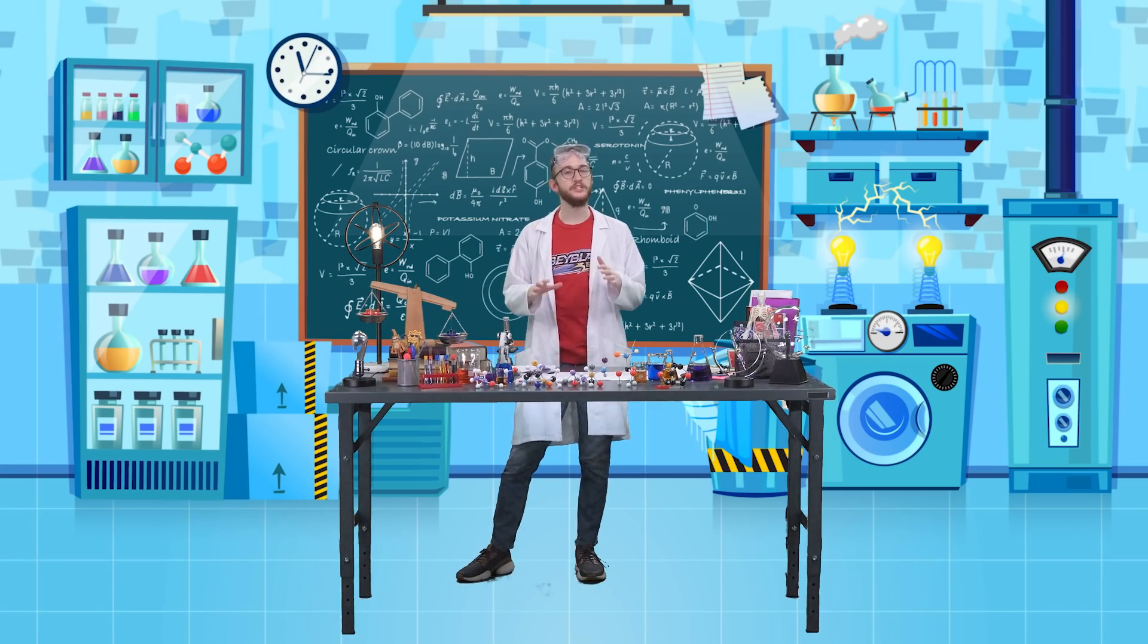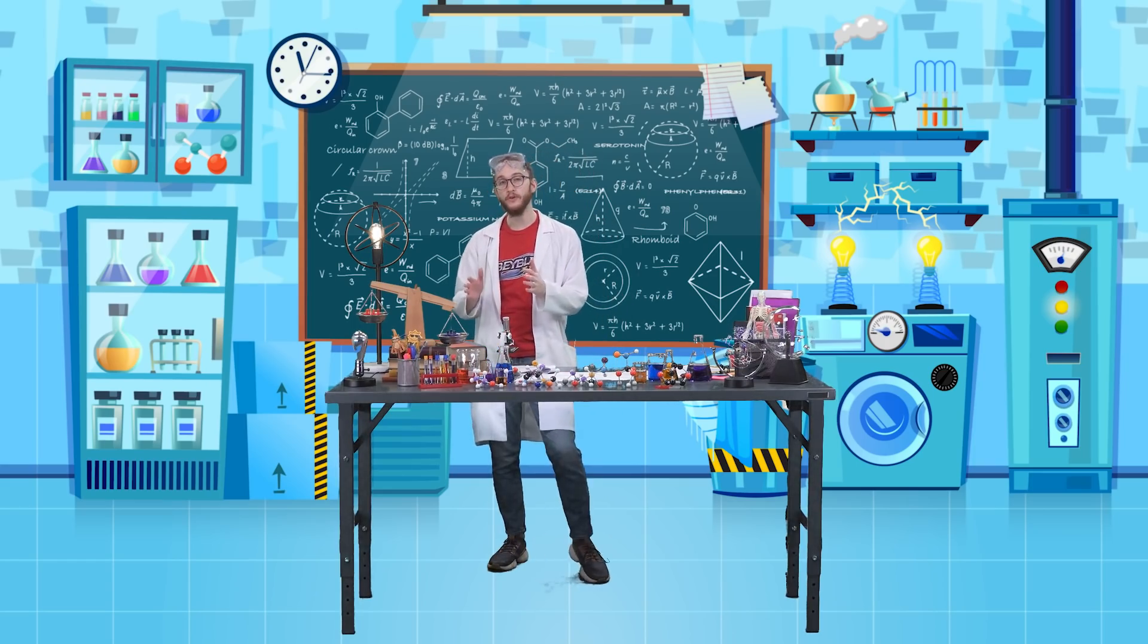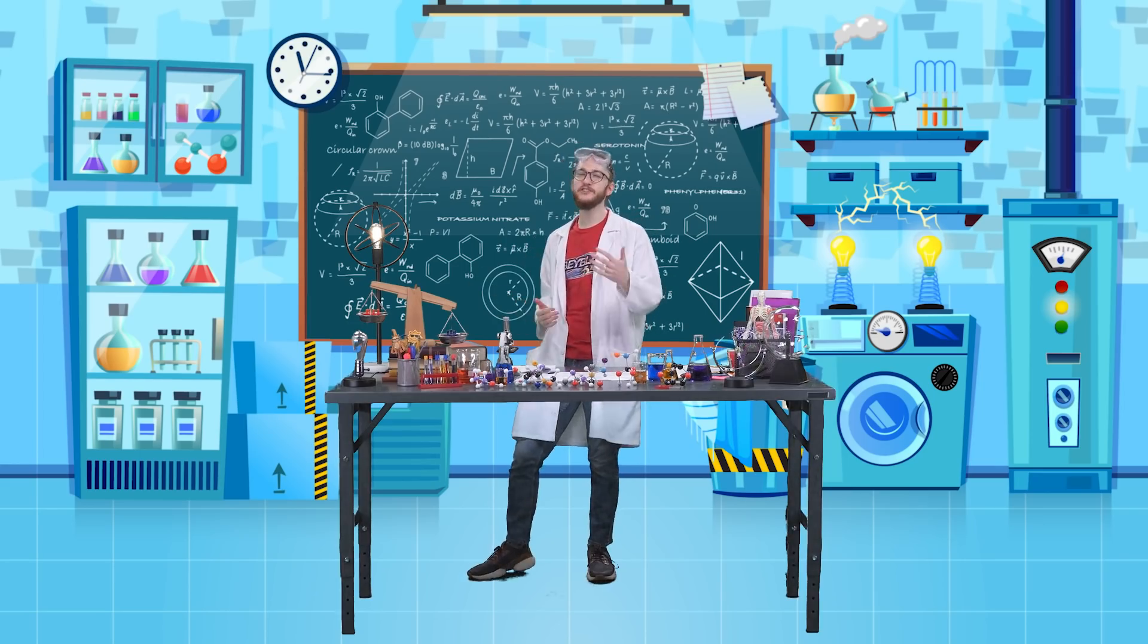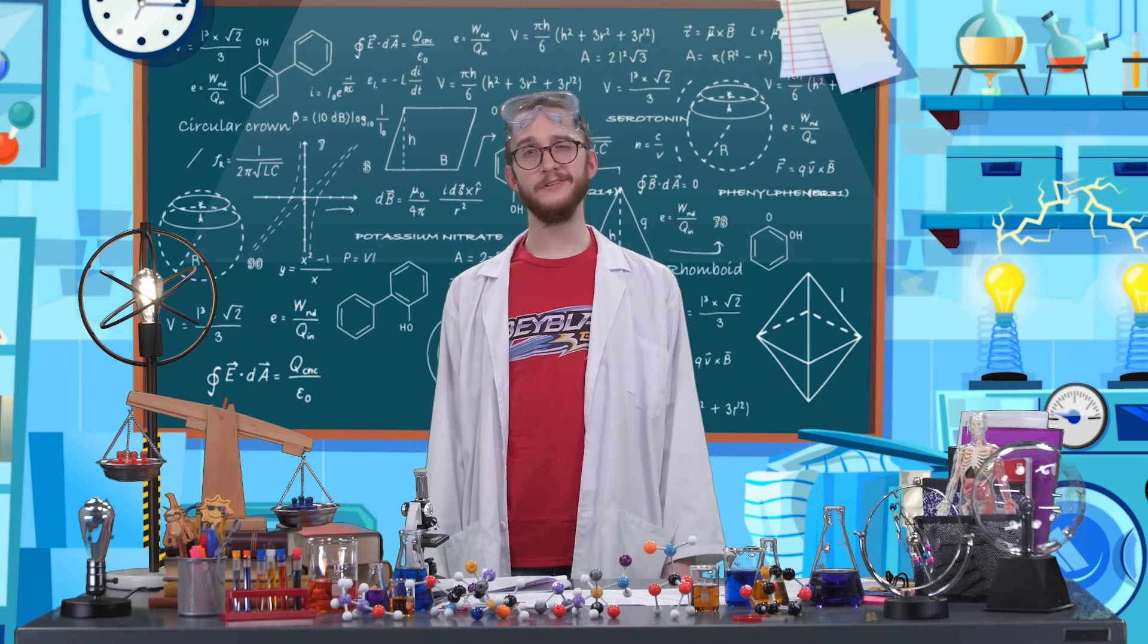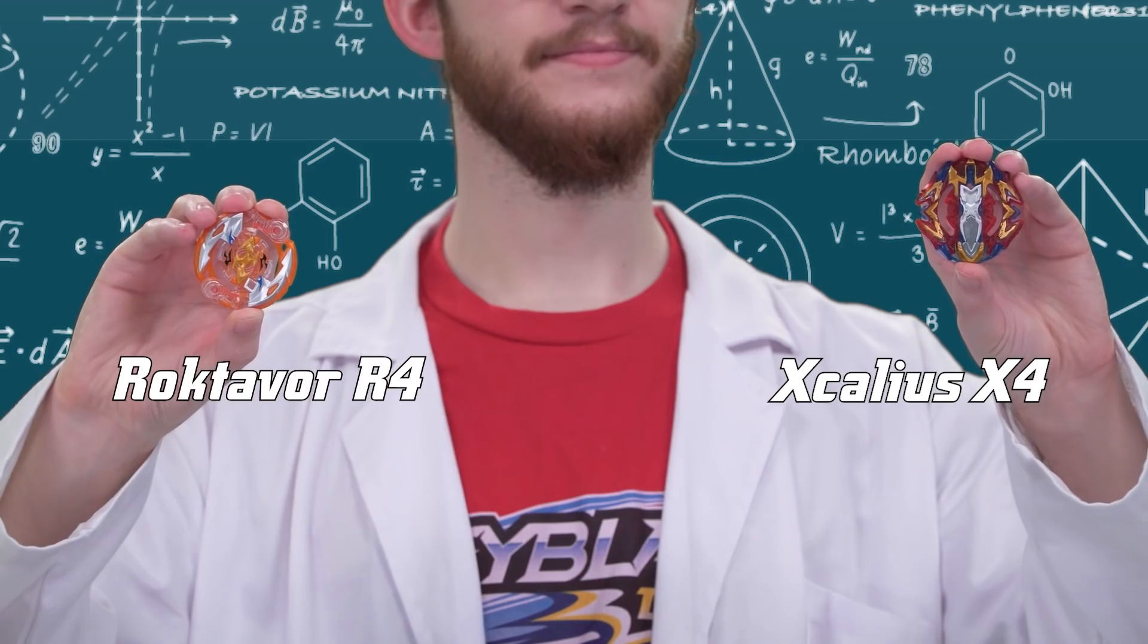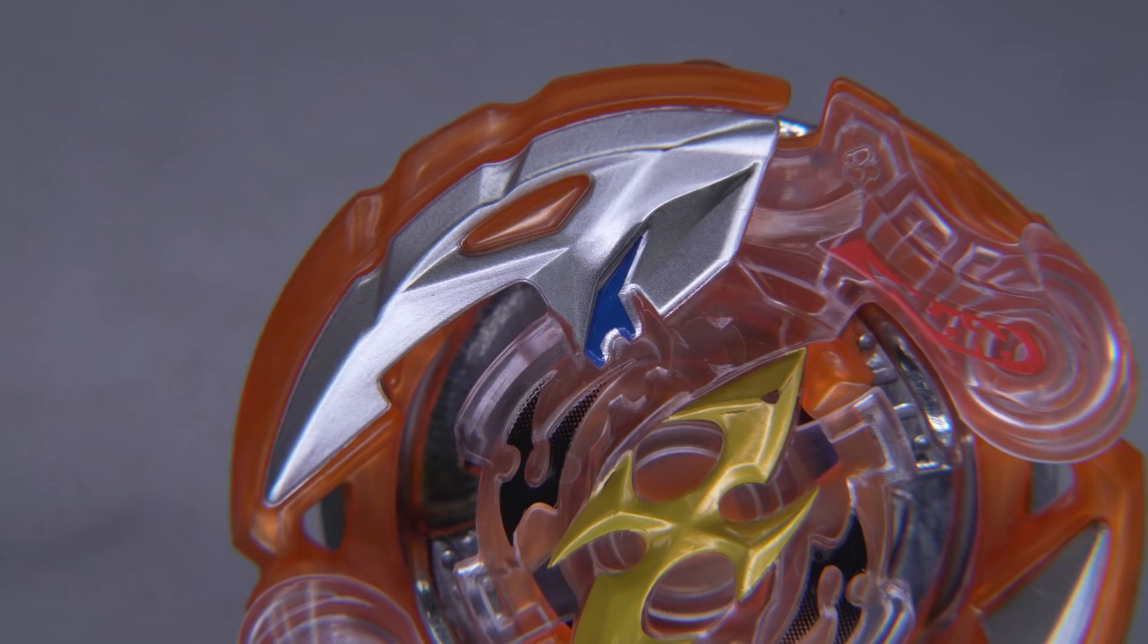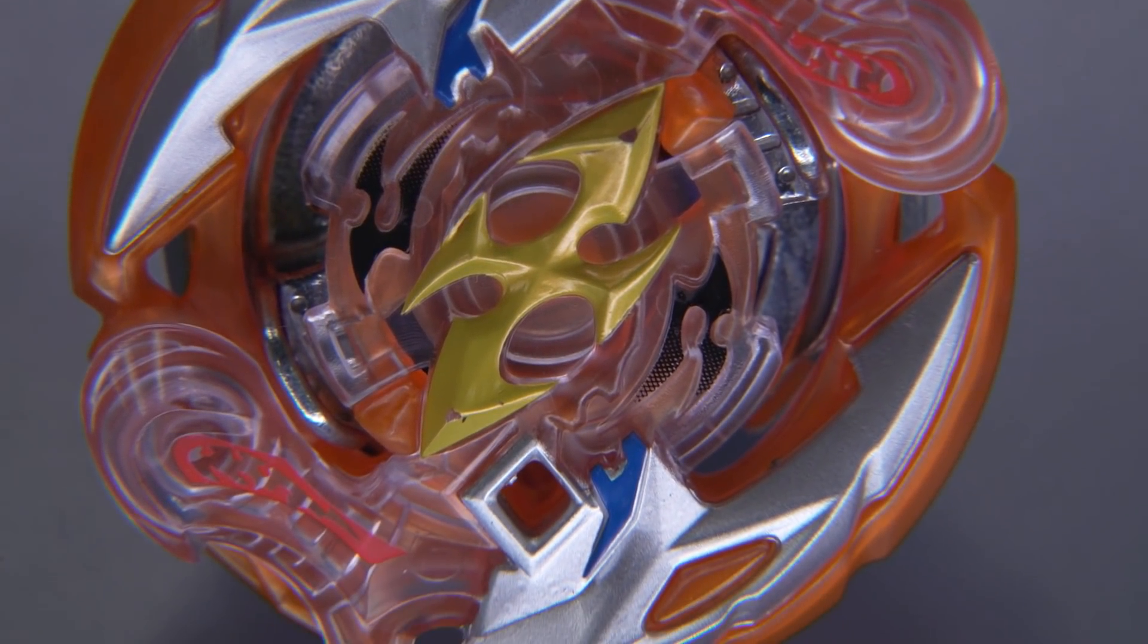It's not just our launch angle that impacts precession. Certain Beyblade tops are more likely to lean to the side while spinning. This usually has something to do with their weight or their shape. And to prove this, I'm going to need the help of Roktavor R4 and Excalius X4. Roktavor R4 is a pretty well balanced top. So, I predict it will stay spinning on its tip for longer. It will take a long time to begin precession and so it will take a long time to topple over.